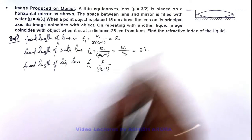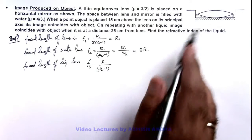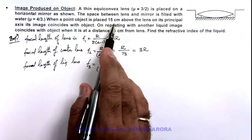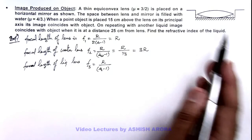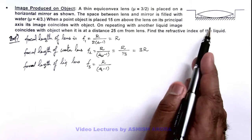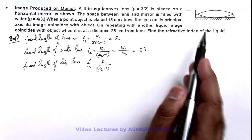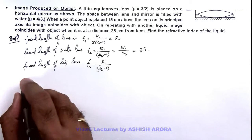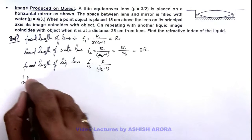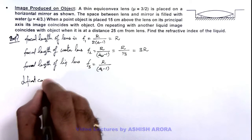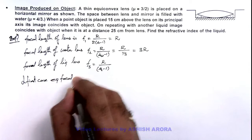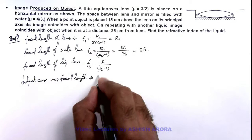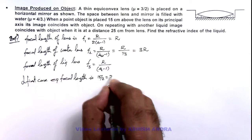Now we are given that when water is there, the image is produced on object when it is placed at a distance 15 centimeter above. And we know in case of an equivalent mirror, when object is placed at twice the focal length position or at center of curvature, its image coincides. So here we can say in first case, equivalent focal length is 15/2, that is equal to 7.5 centimeter.